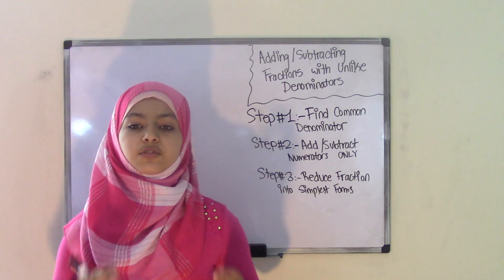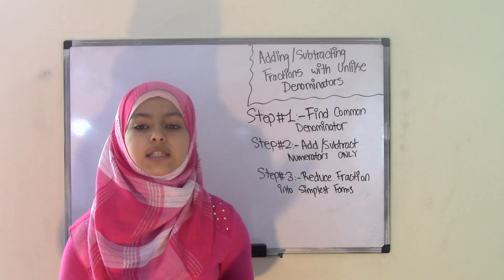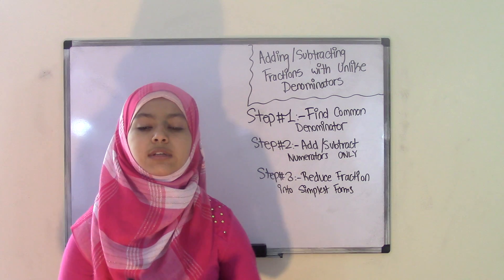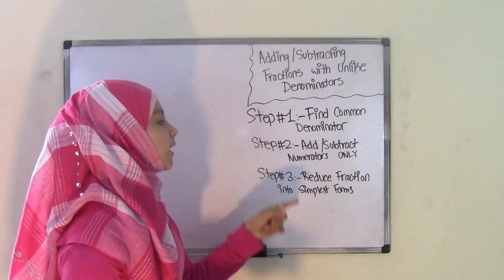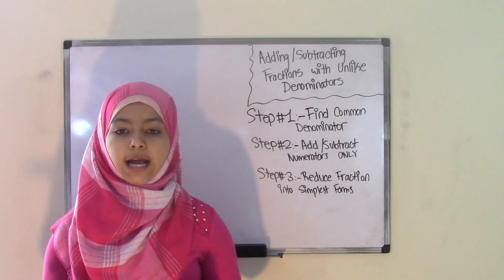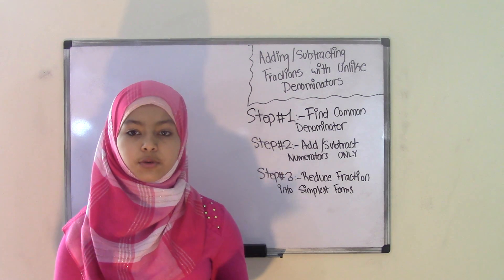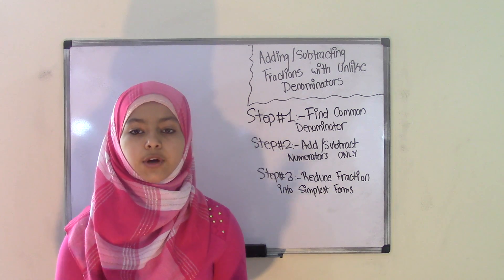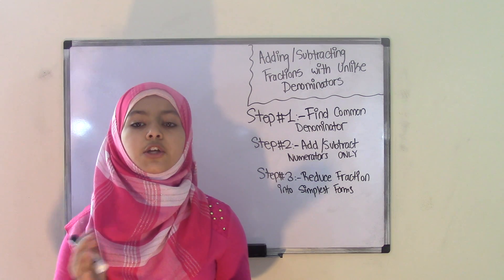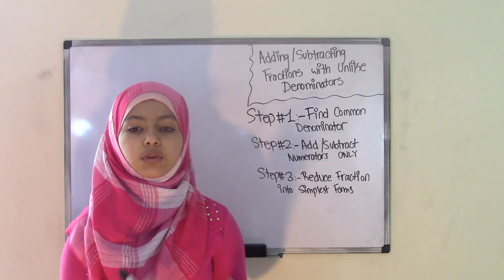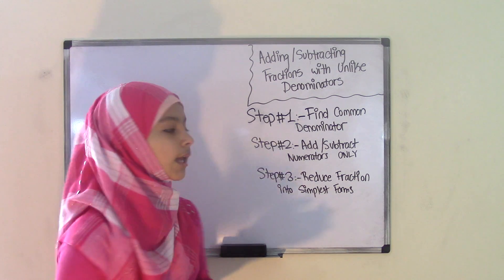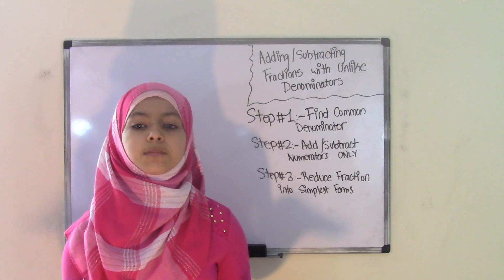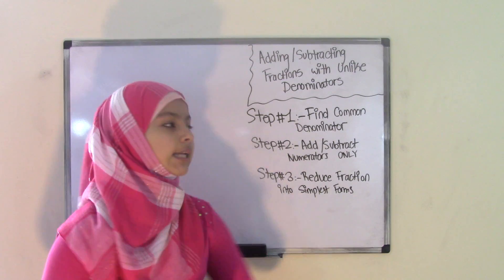Now, what are unlike denominators? Remember that unlike denominators are just the denominators that are not the same. So whenever you're adding or subtracting fractions, you need to first find the common denominators, which is step one. Step two is add or subtract the numerators only — you keep the denominators just as they are. And finally, step three is that once you have your answer, you reduce your fraction to simplest form. So all it takes is three easy steps.